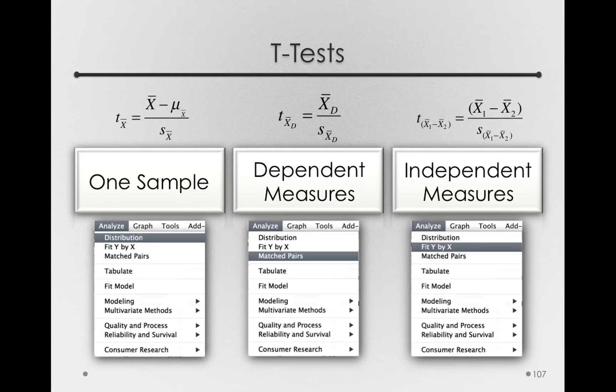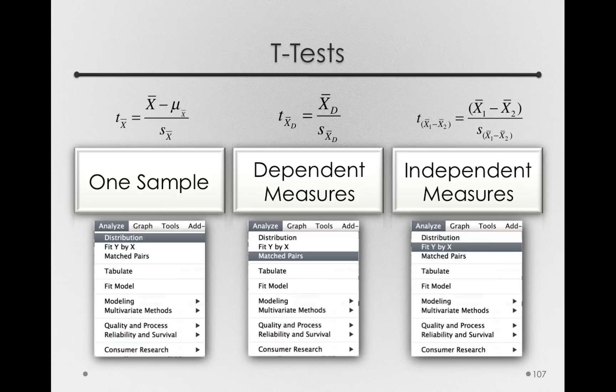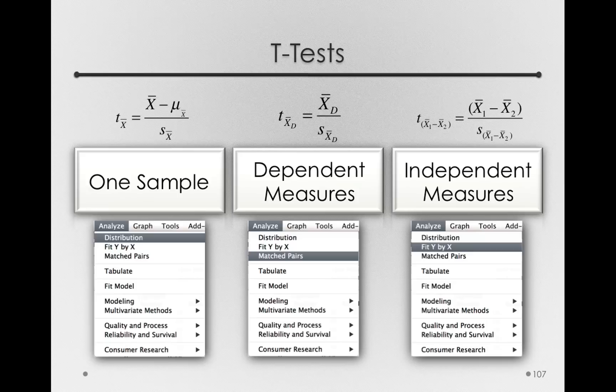We measured them after a placebo and after taking the real drug. In the Independent Measures study, we didn't measure the same people twice. Instead, we measured totally separate groups of people, one group taking the placebo and one group taking the real drug.